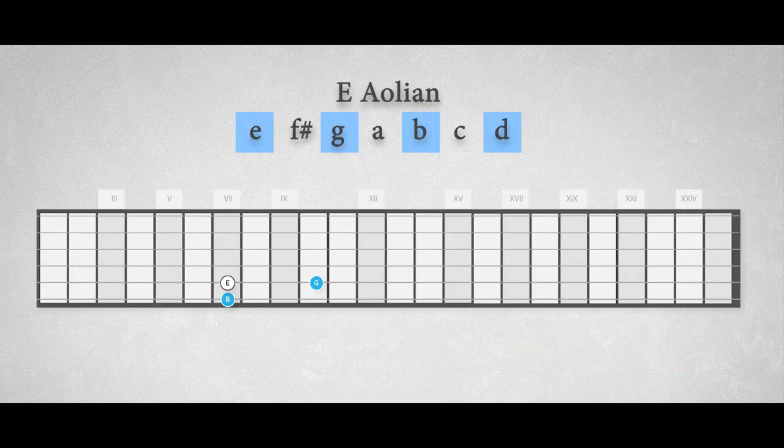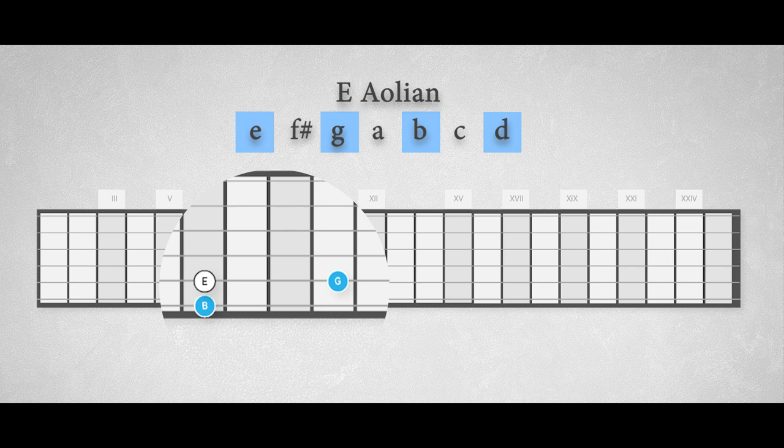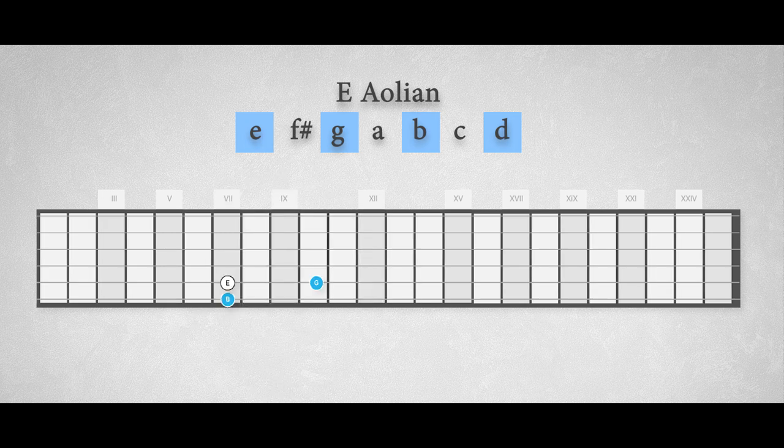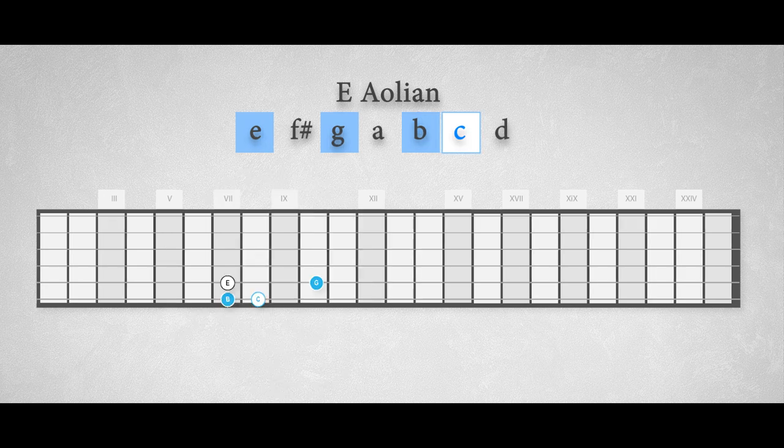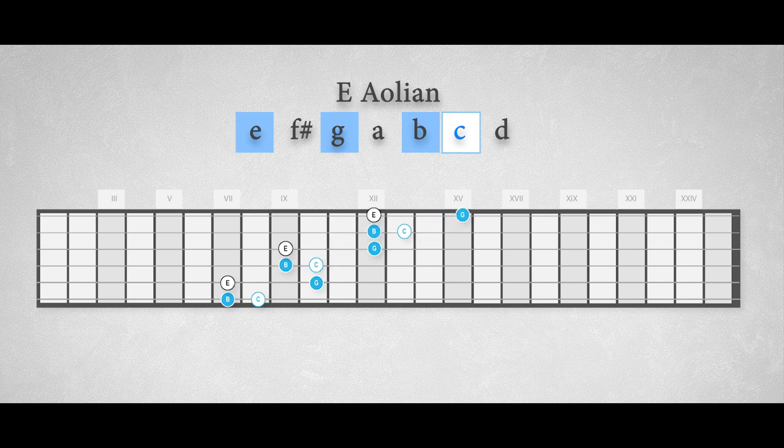The E minor 7 arpeggio will do over the E Aeolian mode, but we also can add the minor 6th to the minor triad to get that real Aeolian sound. In fact, we have now created a C major 7 arpeggio, which sounds pretty Aeolian over an E minor chord.